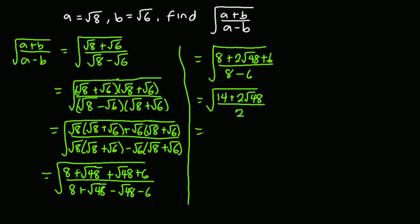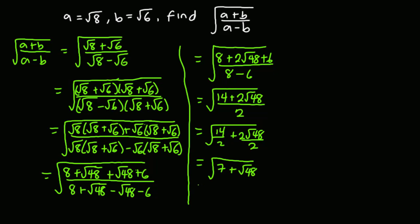So this will give us √14/2 plus 2√48/2, which simplifies to √7 plus √48. Now let's simplify √48.